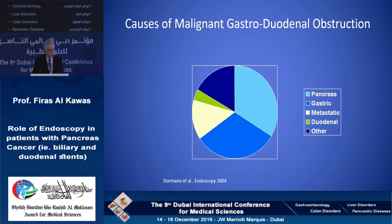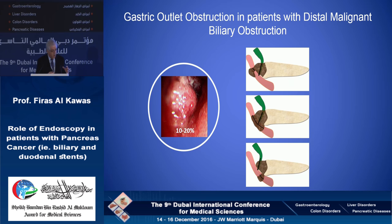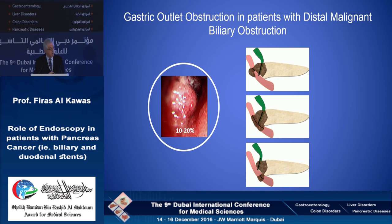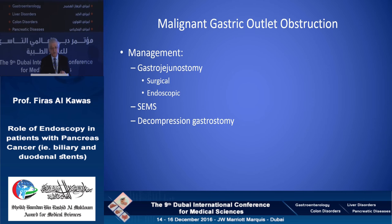Pancreatic cancer is one of the most common causes of malignant gastric outlet obstruction, which can occur when the obstruction engulfs the ampulla of Vater — either proximal or distal. We see it in about 10 to 20% of patients. Management options include surgical gastrojejunostomy, endoscopic gastrojejunostomy, duodenal stent placement, or rarely a decompression gastrostomy.